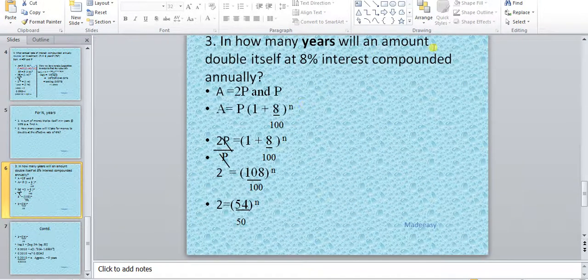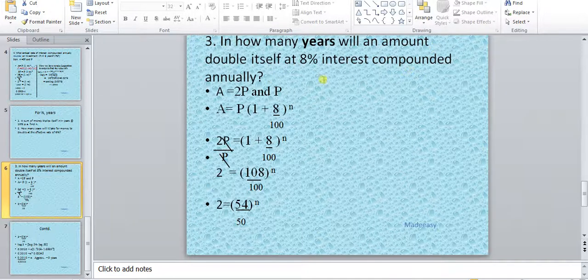In how many years will an amount double itself at 8% interest compounded annually?